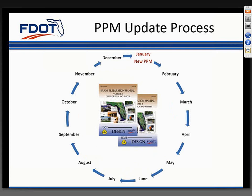We only produce an update for the PPM once per year, in January. When urgent issues arise calling for a revision or correction—usually related to safety or a fatal flaw—and it can't wait until the next scheduled update, we'll publish a design bulletin. These, along with previous editions of the PPM, are posted on our webpage.